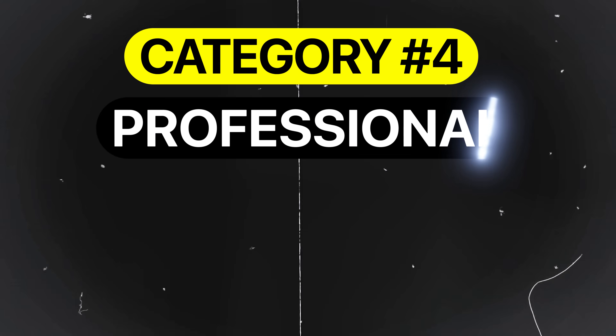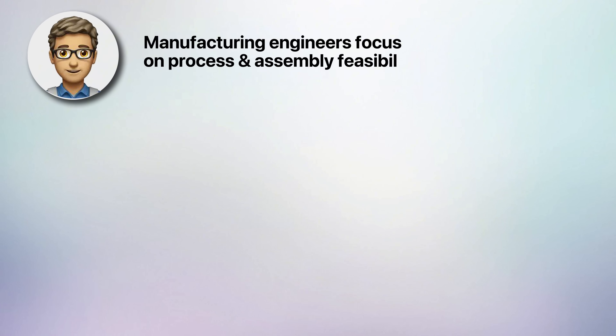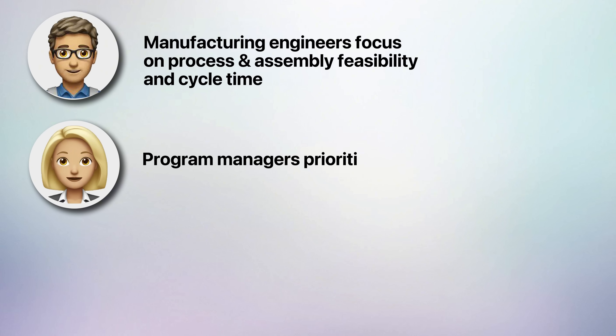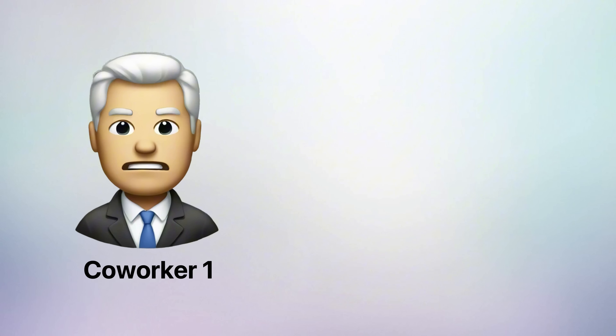The final category is professional and interpersonal mistakes. Mistake number twelve is treating everyone the same way. Different stakeholders, colleagues, customers, and suppliers have unique personalities, priorities, and communication styles. Manufacturing engineers focus on process and assembly feasibility and cycle time. Program managers prioritize schedules and risk mitigation, while quality engineers concentrate on compliance and tolerances. For example, explaining design trade-offs using technical equations to a project manager will be far less effective compared to discussing schedule impacts and cost implications. Successful engineers tailor their communication to their audience, fostering alignment and driving project success. Some co-workers may have a short temper, others may value rapport and trust, so invest time in understanding each individual's preferences to build strong working relationships.